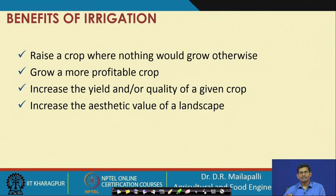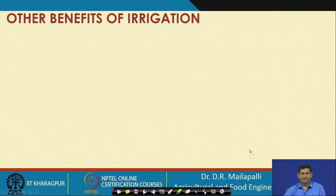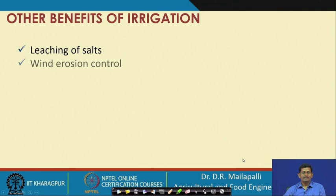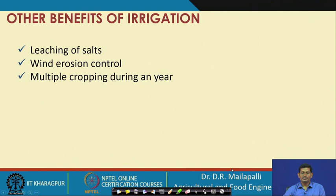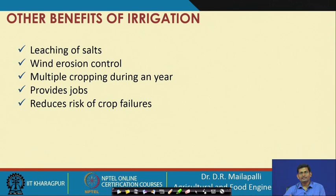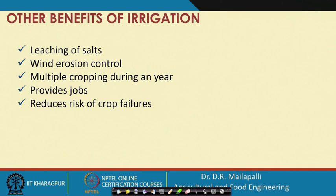Additional benefits of irrigation include leaching salts from the soil using excess water, controlling wind erosion by keeping the ground surface wet, enabling multiple cropping during a year, providing jobs, reducing the risk of crop failures by avoiding water-stress conditions, and improving the socioeconomic conditions of rural populations through income generation.